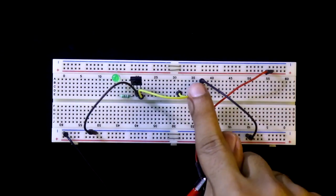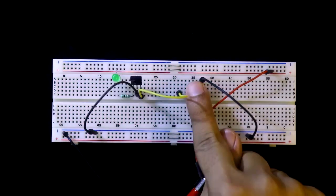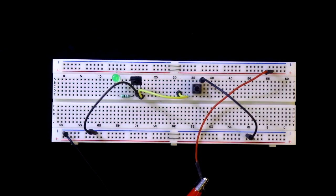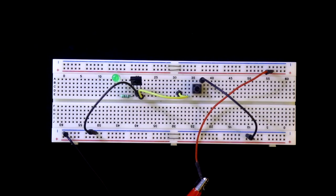Now if I press this switch, this LED is glowing. So in this way we can switch between PNP and NPN.